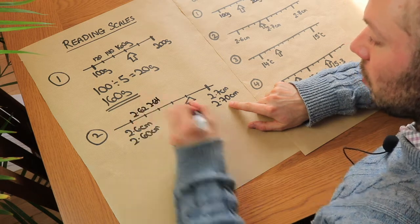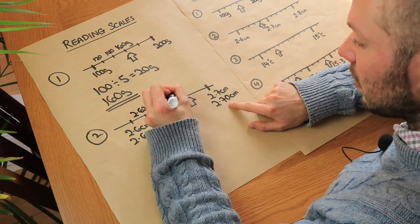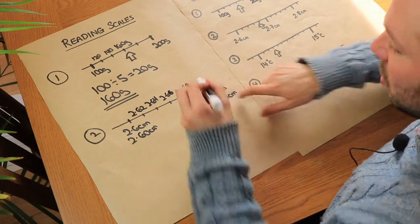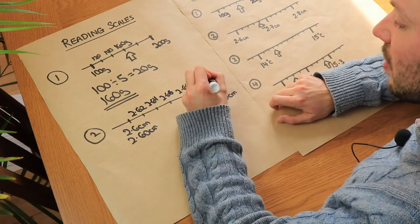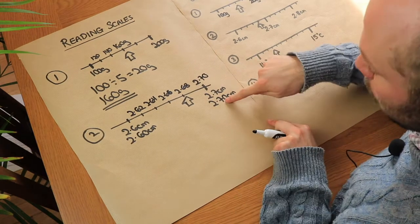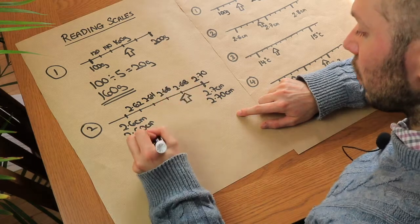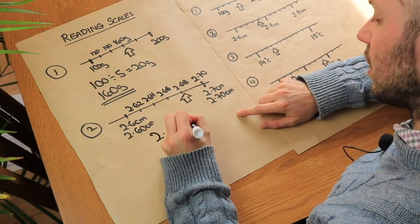So this is going to be 2.62, that's going to be 2.64, that's going to be 2.66, that's going to be 2.68 and then if we add 2 again we see we get 2.70 and that works, that matches that one. So we can see that the answer is 2.68 centimeters.